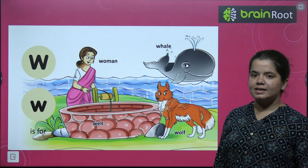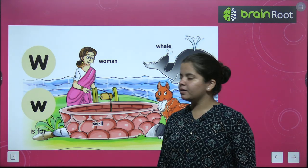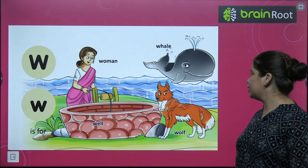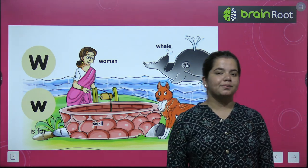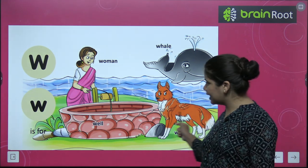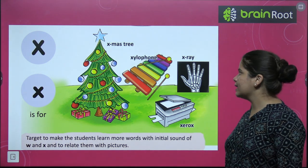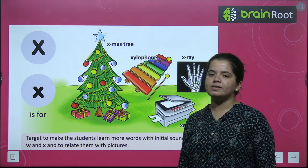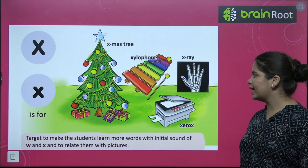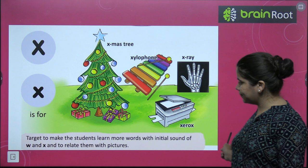Next is W. W for women, W for whale, W for wolf. Thik hai. Aage dekhenge X. X for xmas, X for xylophone, X for x-ray, X for xerox.